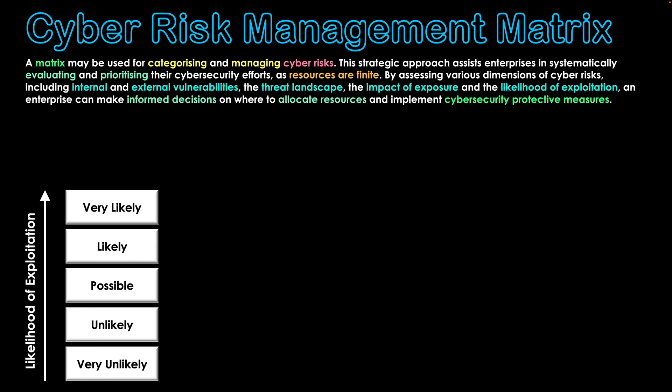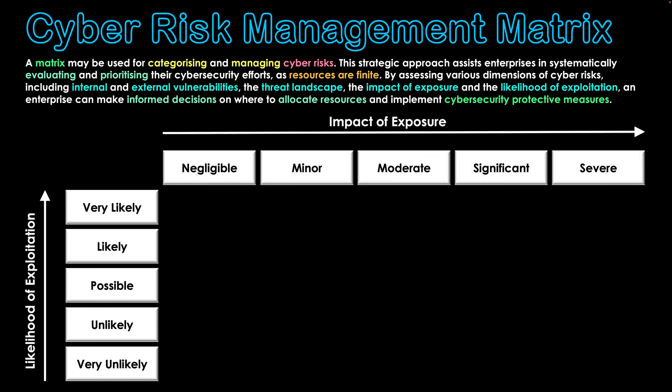Going across the horizontal axis, we're looking at the possible impact of exposure. If this threat occurs and gains access to a system, how much damage is it going to cause? Will it be negligible — meaning nothing really significant? Is it going to be minor, where some data could be affected? Is it moderate, with potential access to specific records? Is it significant? And then is it severe — is it going to bring our system to a halt, potentially destroy our data, and really cripple our business? That's what we mean by impact of exposure: if a threat occurs, what impact will it have on a specific enterprise?